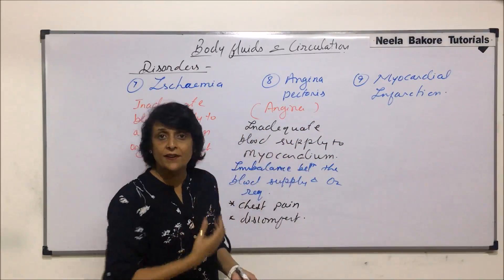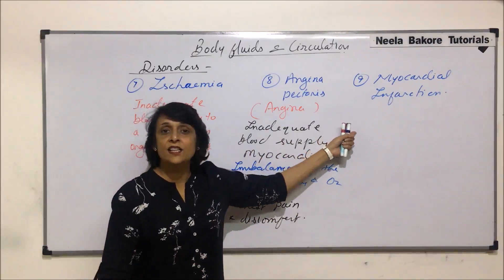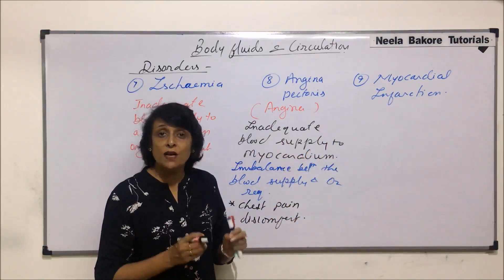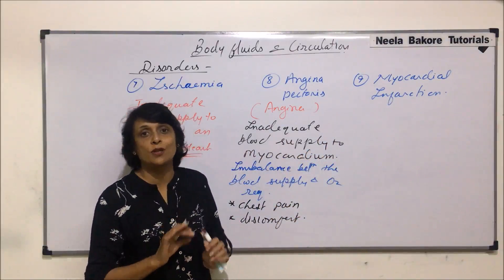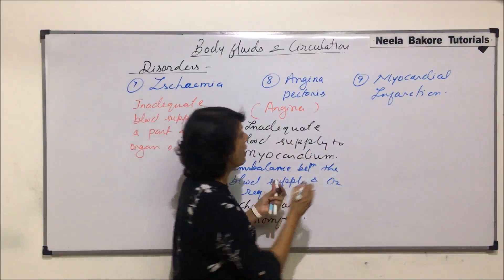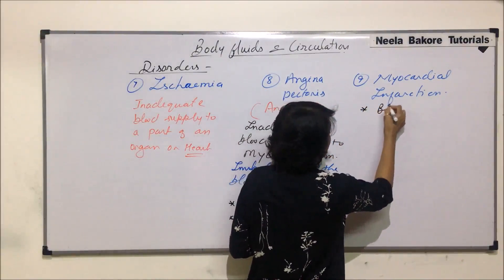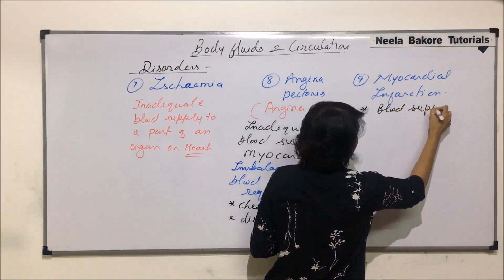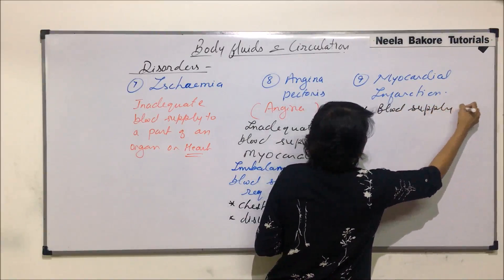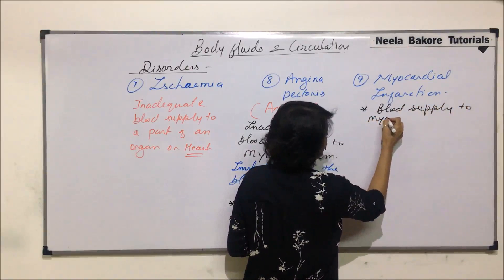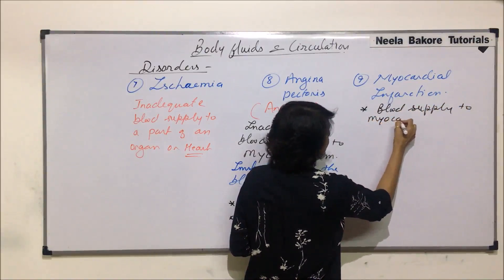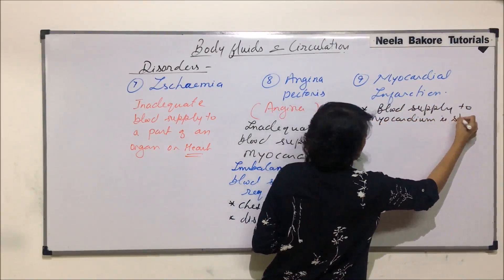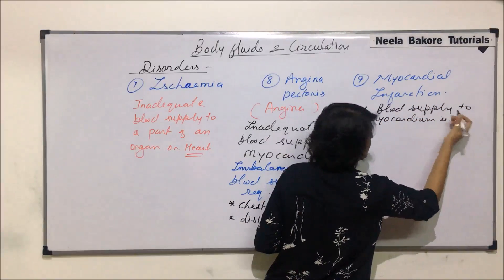Myocardial infarction is the most extreme condition. That condition is when the blood supply to the heart muscles is totally stopped — the blood supply to the myocardium stops completely.